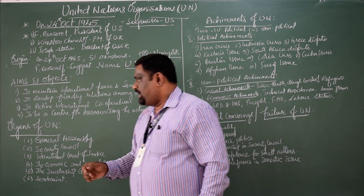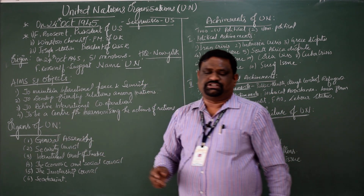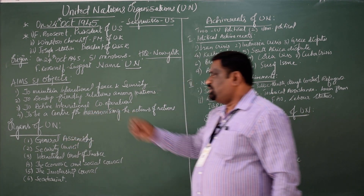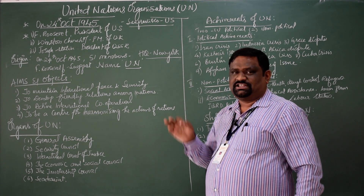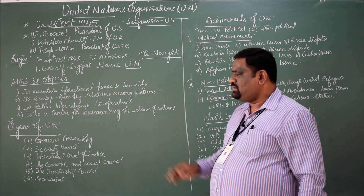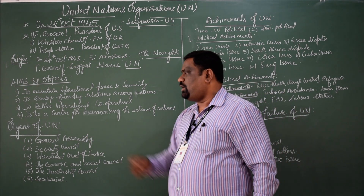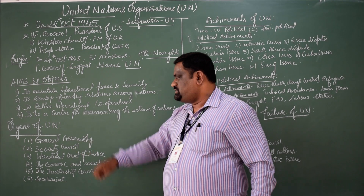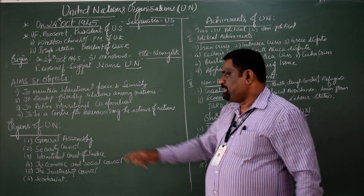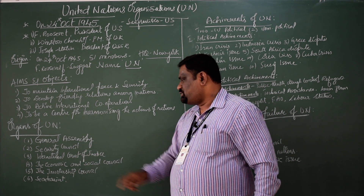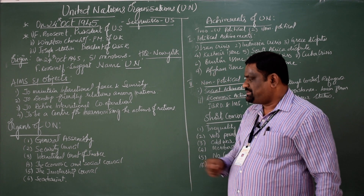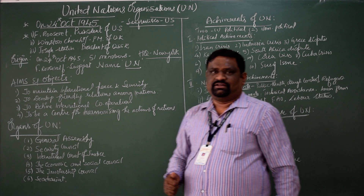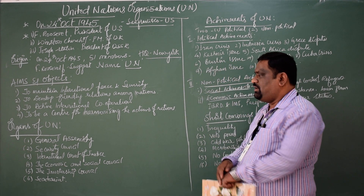Let us move on to the organs of the United Nations Organization. The UNO's charter clearly mentions there are six important organs: namely the General Assembly, the Security Council, the International Court of Justice, the Economic and Social Council, the Trusteeship Council, and the Secretariat.